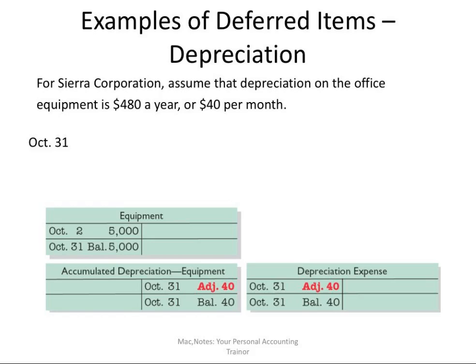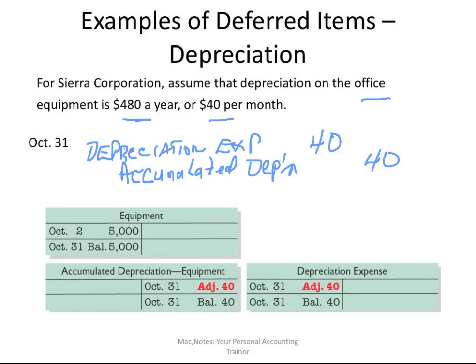The same goes for depreciation. Sierra Company assumes depreciation on the office equipment of $480 a year. So by the end of October, we record depreciation expense with a debit of $40. Rather than reduce the equipment account directly, we instead increase what's called a contra asset account. We open up an account called accumulated depreciation for the equipment and put the credit in there.